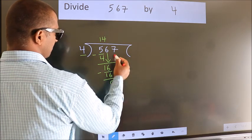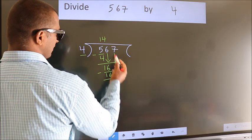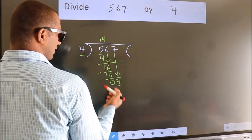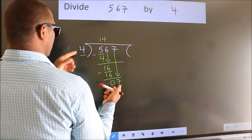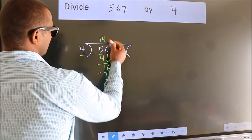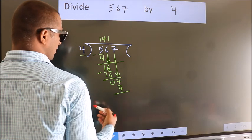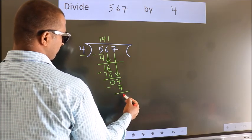After this, bring down the beside number. So 7 down. So 7. A number close to 7 in 4 table is 4 once 4. Now we subtract. We get 3.